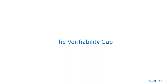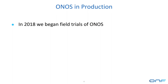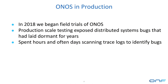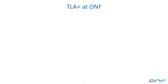That brings me to our use of TLA+ and what I'm calling the verifiability gap. In 2018 we began field trials of ONOS to bring it into production at Comcast. Production-scale testing exposed many bugs that had been dormant in our system for years — bugs we'd never seen because we'd never tested in quite the right way. I personally spent hours and often days scanning gigabyte-sized logs to understand traces and track down distributed systems bugs. Eventually ONOS was deployed nationwide in Comcast's network, and TLA+ was an important part of that process.